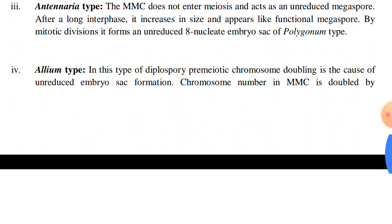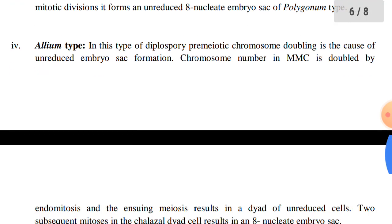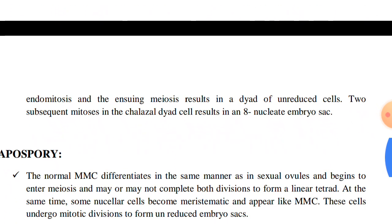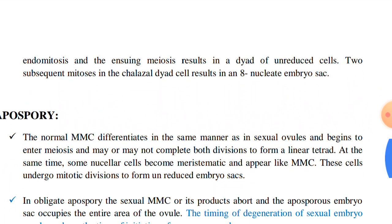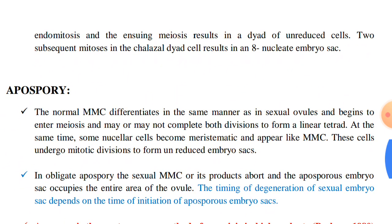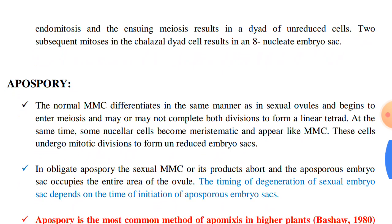The fourth category is the Allium type. In this type of diplospory, pre-meiotic chromosome doubling is the cause of unreduced embryo sac formation. The chromosome number in the megaspore mother cell is doubled by endomitosis, and the ensuing meiosis results in a dyad of unreduced cells. Two subsequent mitoses in the chalazal dyad cell result in an 8-nucleate embryo sac.